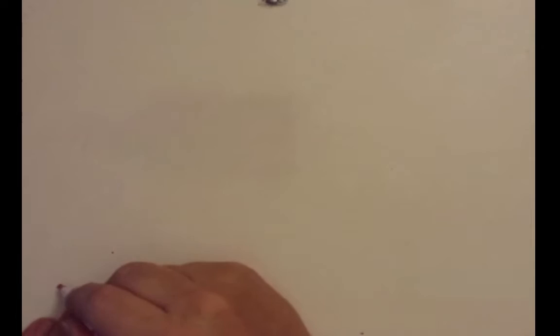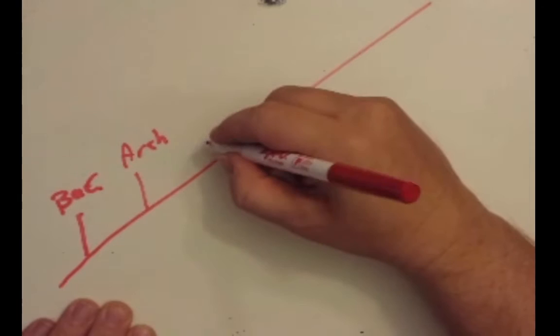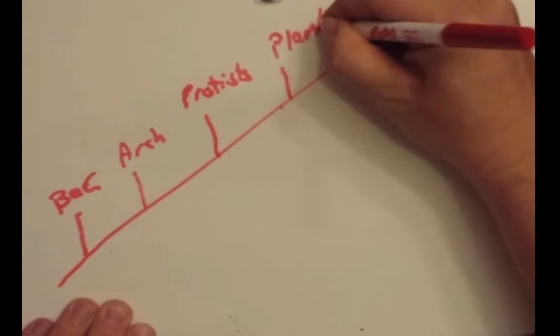So let's begin by drawing our standard phylogenetic tree where we have the bacteria, abbreviated BAC, our archaea, and then we form the eukaryotes. We have protists, plants, fungi, and then animals.